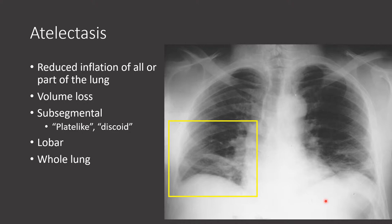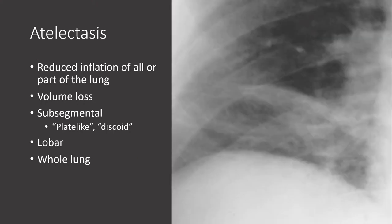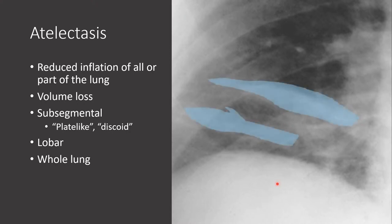Here's a zoomed-in image of the right lower lobe showing these streaky opacities of increased density at the lung base. These represent areas of subsegmental atelectasis — that is, airless lung.